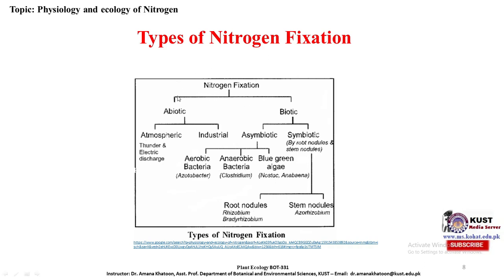Fixation converts nitrogen in the atmosphere into forms that plants can absorb through their root systems. There are two main categories: abiotic and biotic. In abiotic nitrogen fixation, there are two kinds: atmospheric fixation through thundering and electrical discharge, and industrial fixation through various industrial processes.